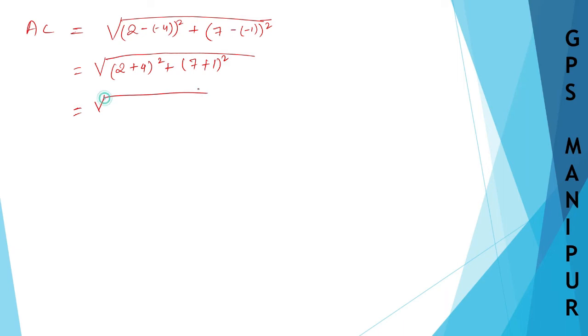Now root over 2 minus into minus plus 4 whole square plus 7 minus into minus plus 1 whole square, which will be 2, 4, 6, 6 square plus 7, 8 square. 6 square is 6, 6, 6, 6, 8 square is 8, 6, 4, which will be root over 36 plus 64, 100. 100 root is 10.